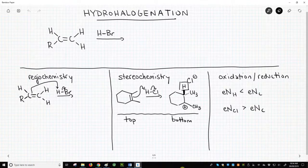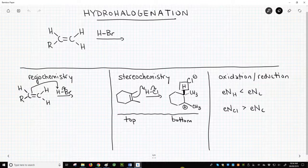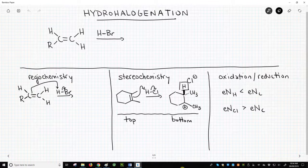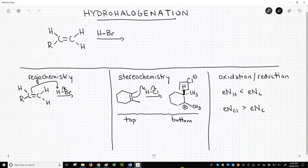To do a hydrohalogenation, we need an alkene like the one shown in the upper left and one of the strong halogen acids: HCl, HBr, or HI. HF is not acidic enough and does not work. We'll focus on HBr, but all the acids behave the same way.